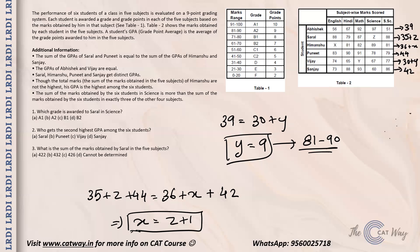Since Himanshu's GPA must be the highest, his total grade points must exceed Puneet's 44. Currently Puneet has the highest known total. If X equals 8, Himanshu's total becomes 44, equal to Puneet — that's not allowed since Himanshu must be strictly highest. Therefore the minimum possible value of X is 9, and the possibilities for X are 9 or 10.